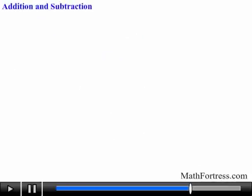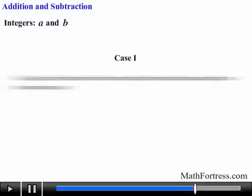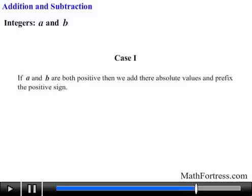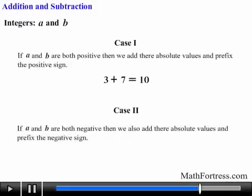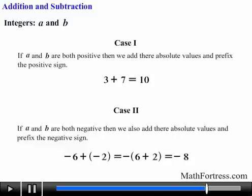Let's move along and talk about addition and subtraction of integers. If we have two integers, say a and b, then we can add them in five distinct ways. If a and b are both positive, then we add their absolute values and prefix the positive sign. For example, 3 plus 7 equals 10. If a and b are both negative, then we also add their absolute values and prefix the negative sign. For example, negative 6 plus negative 2 equals the sum of their absolute values, 6 plus 2, which is equal to 8, and then we prefix the negative sign.